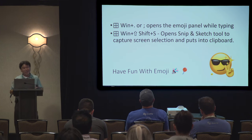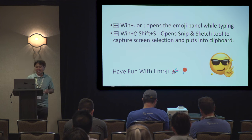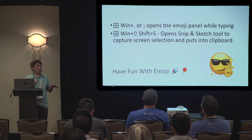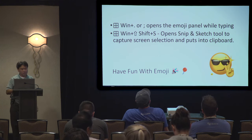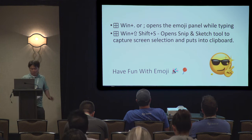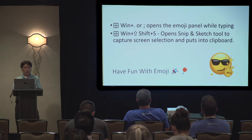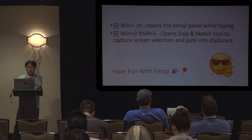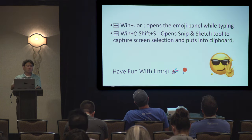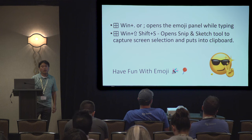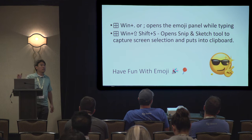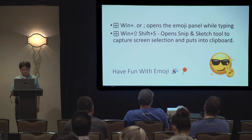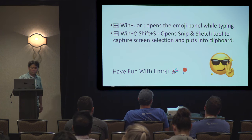Back to the Windows key. Windows dot — if you're typing an email and want to put an emoji, Windows dot opens up the emoji picker. Windows Shift S is very useful: if you just want to capture something on the screen, use Windows Shift S and drag — it will capture it, put it in the clipboard, and you can paste it into your app.